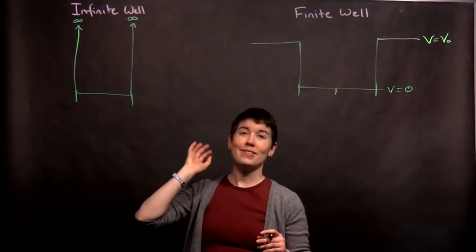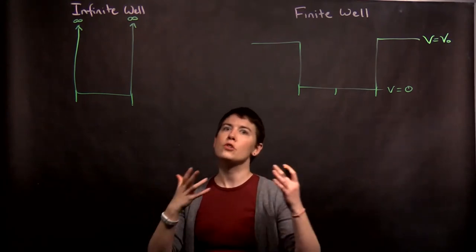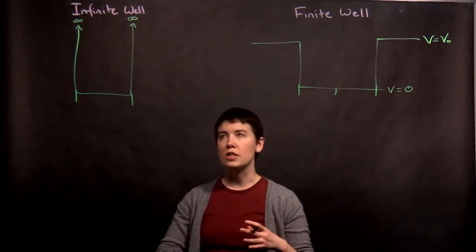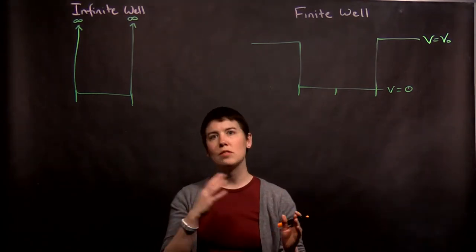We start with the infinite well because it is the simplest to study. So remember that we have the Schrödinger equation, we have the energy eigenvalue equation, and the potential, that V, is really the key that distinguishes between one system and another.